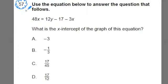Alright, so let's look at number 57. It says, use the equation below to answer the question that follows. They give us this equation: 48x equals 12y minus 17 minus 3x. And it says, what is the x intercept of the graph of this equation?